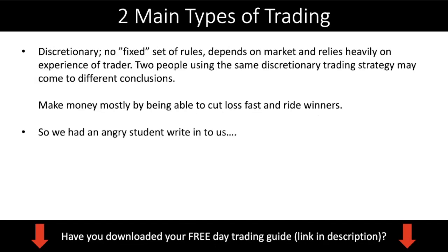So what are the two main types of trading? In trading, there are only two main types: you have discretionary and you have systematic. Discretionary means that there is no fixed set of rules — you kind of just depend on your view of the market, and it relies heavily on the experience of a trader.